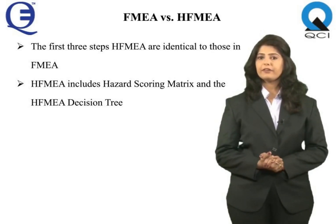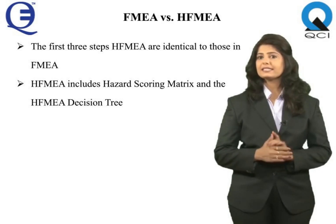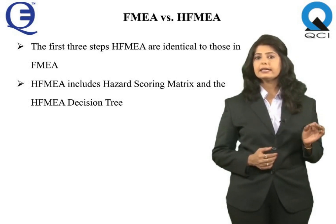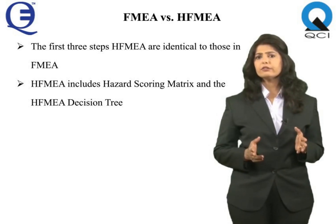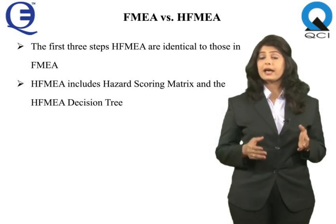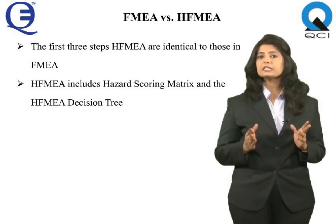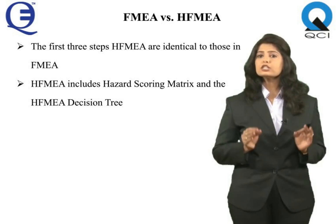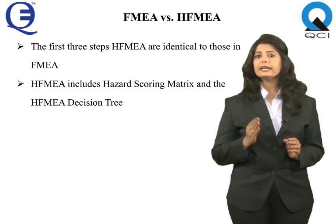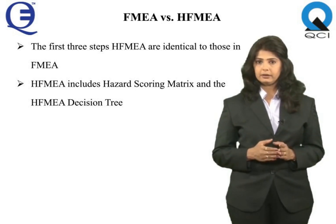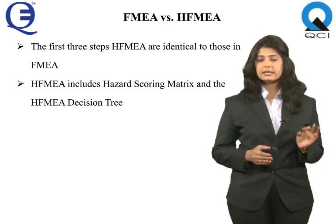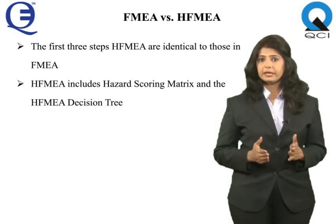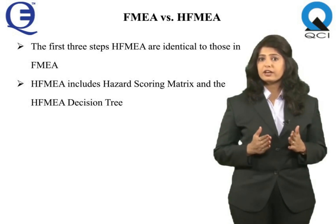The first three steps in HFMEA are identical to those in FMEA. Although severity, probability definitions, actions, outcomes, and designation of actions to team members are present in both, these components are substantially modified in HFMEA. HFMEA also includes new components not found in FMEA, such as the HFMEA Hazard Scoring Matrix and the HFMEA Decision Tree.